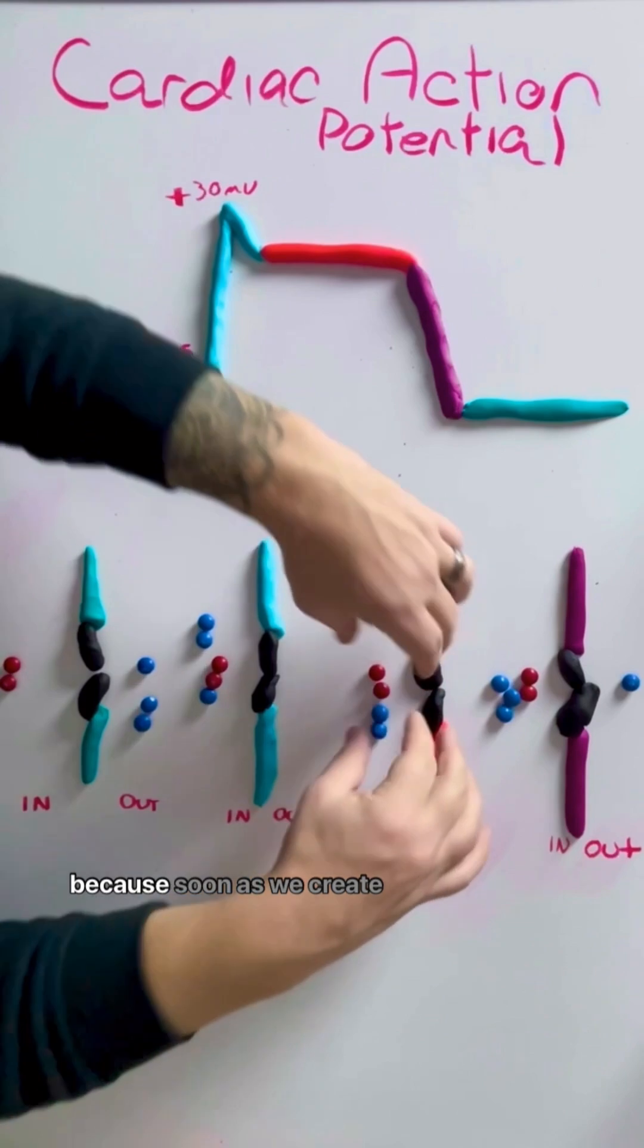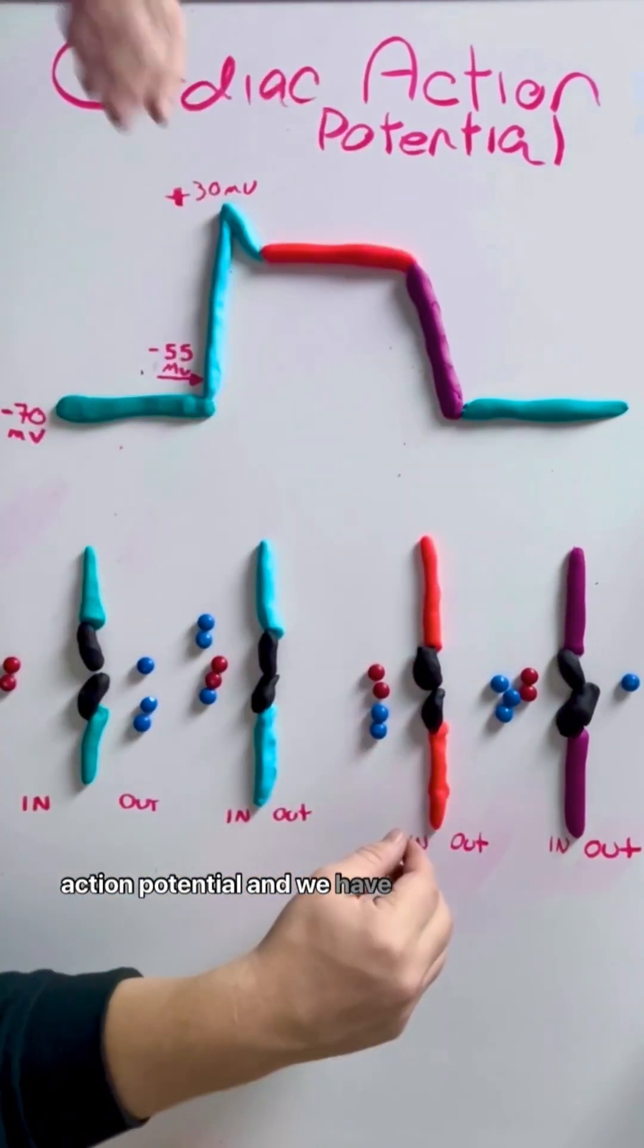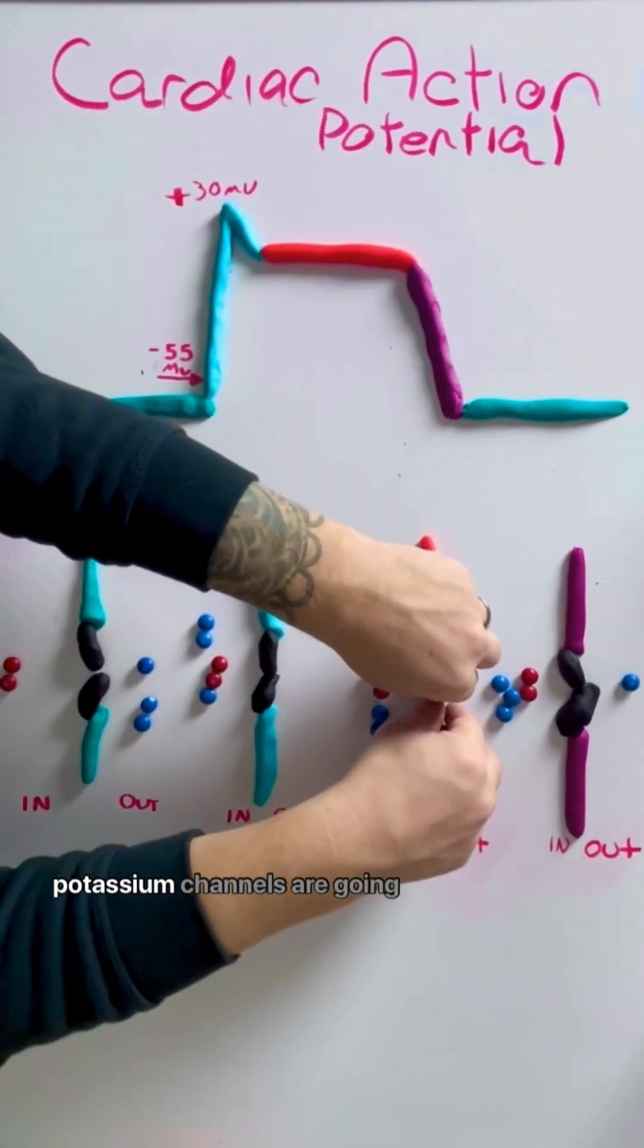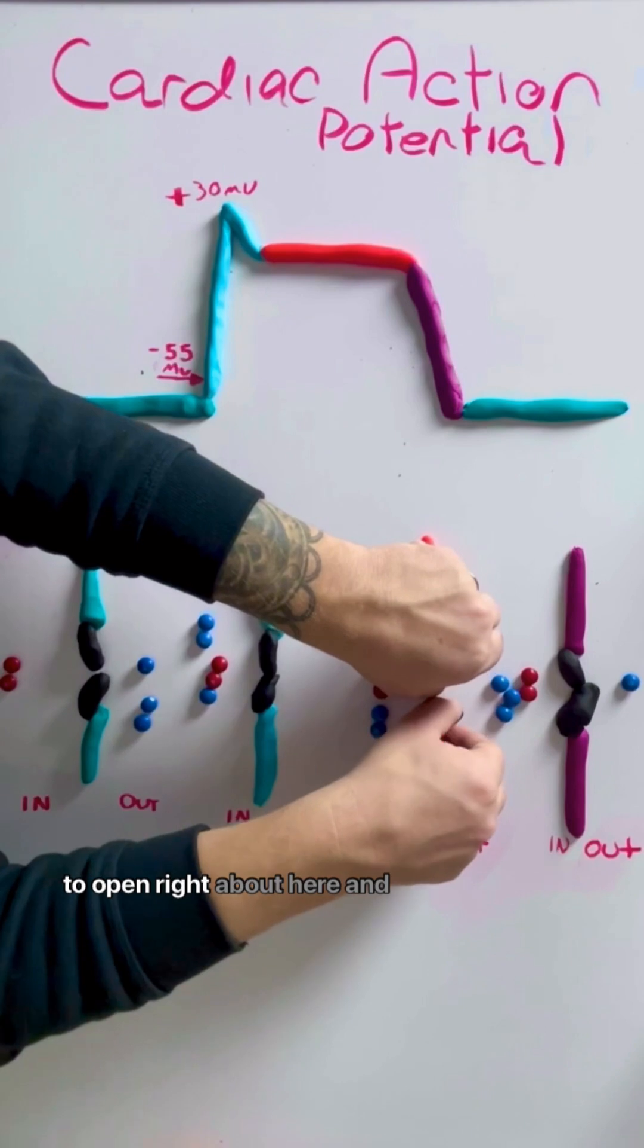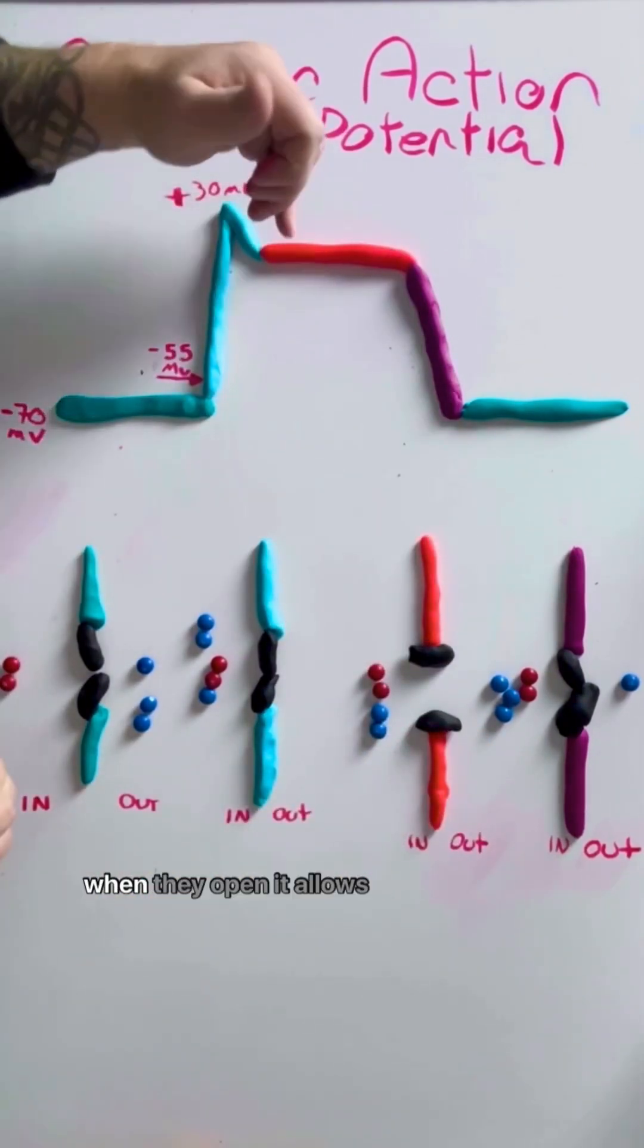Well, why that occurs is because as soon as we create action potential and we have that depolarization, our potassium channels are going to open right about here. And when they open,